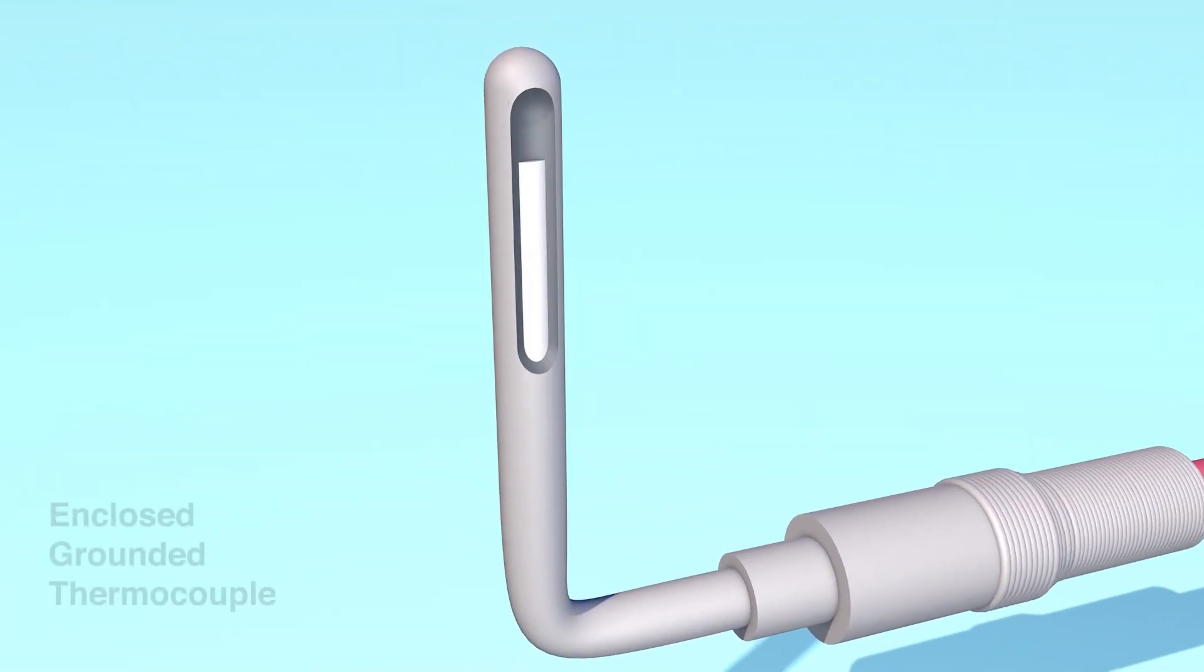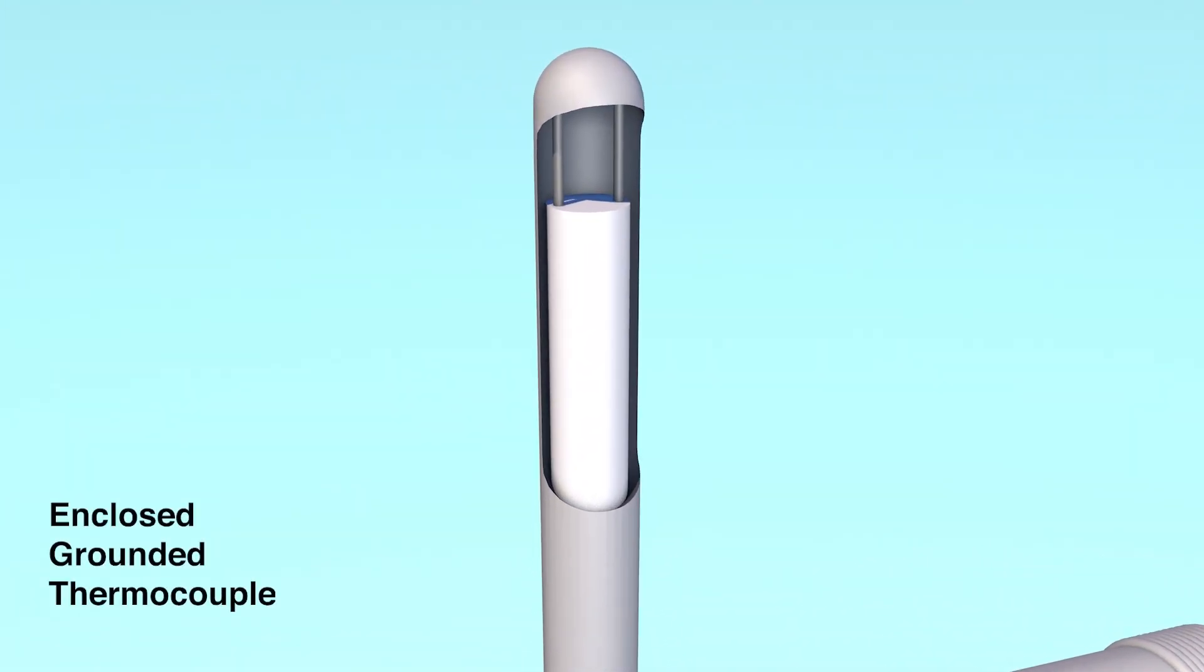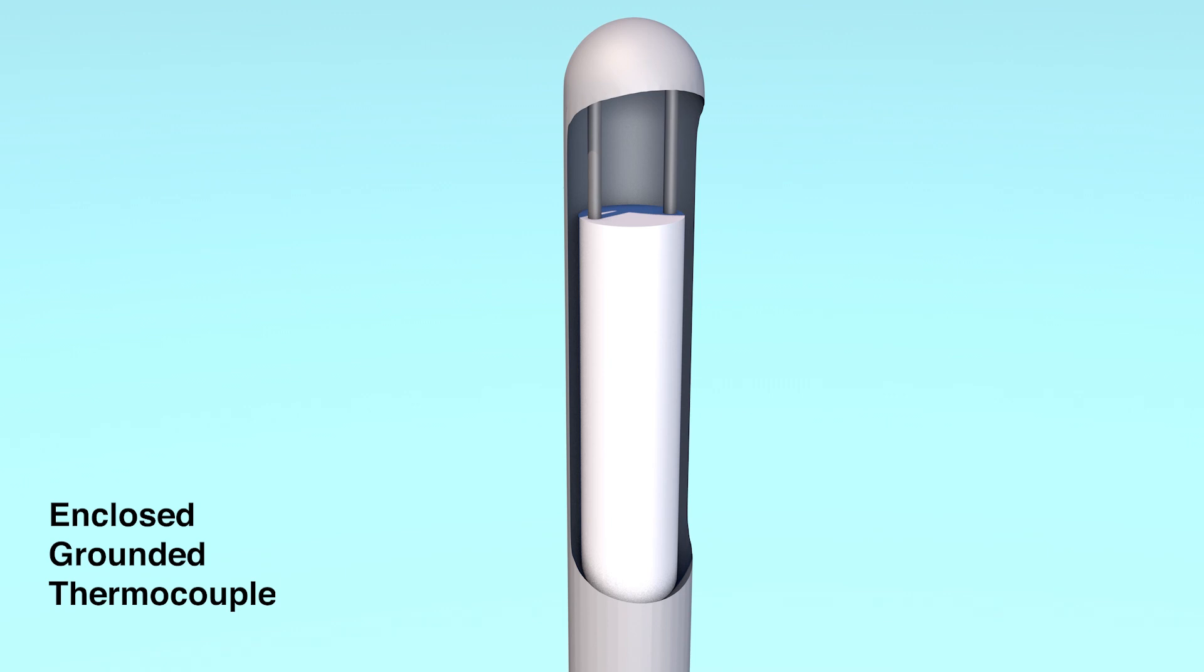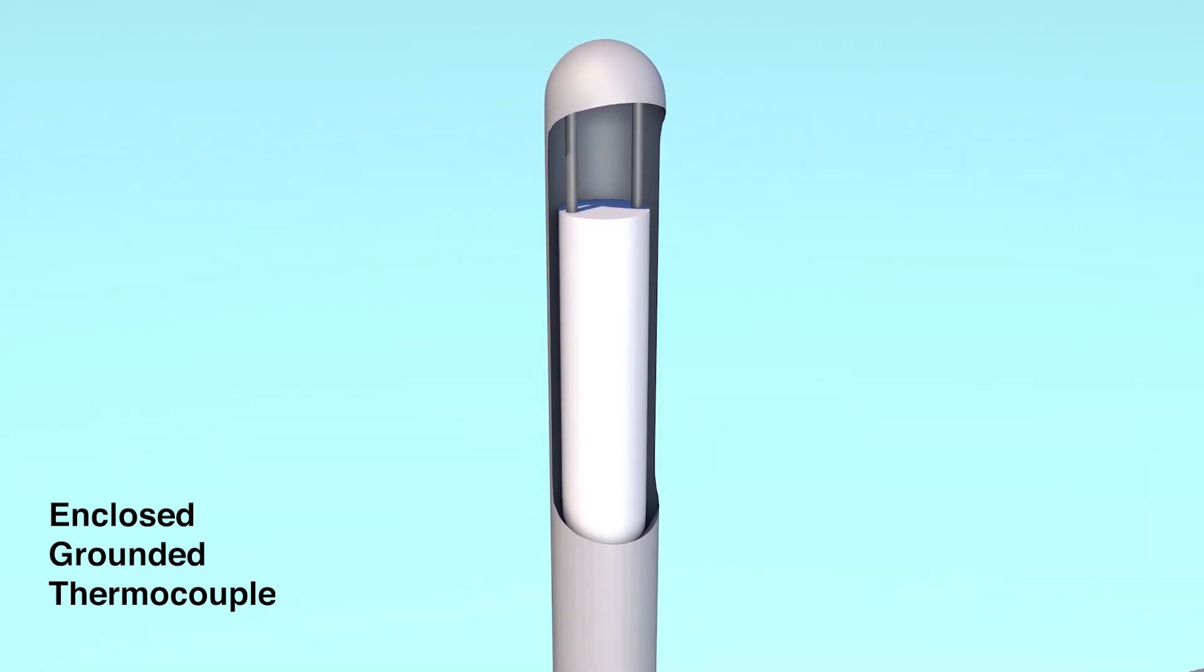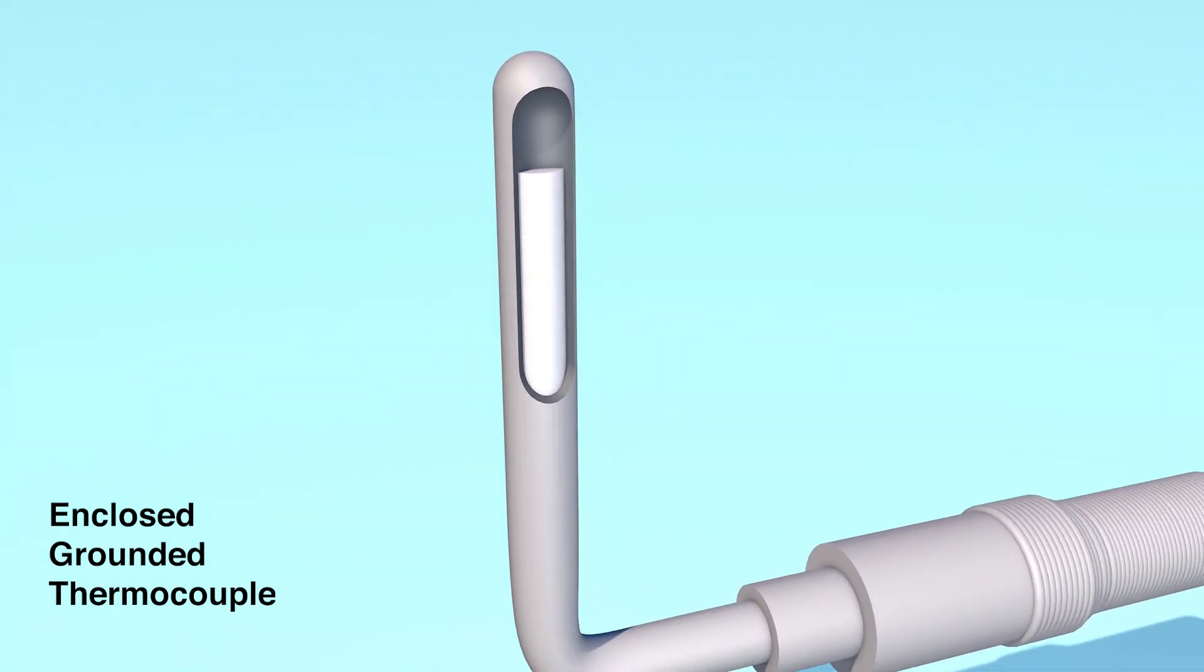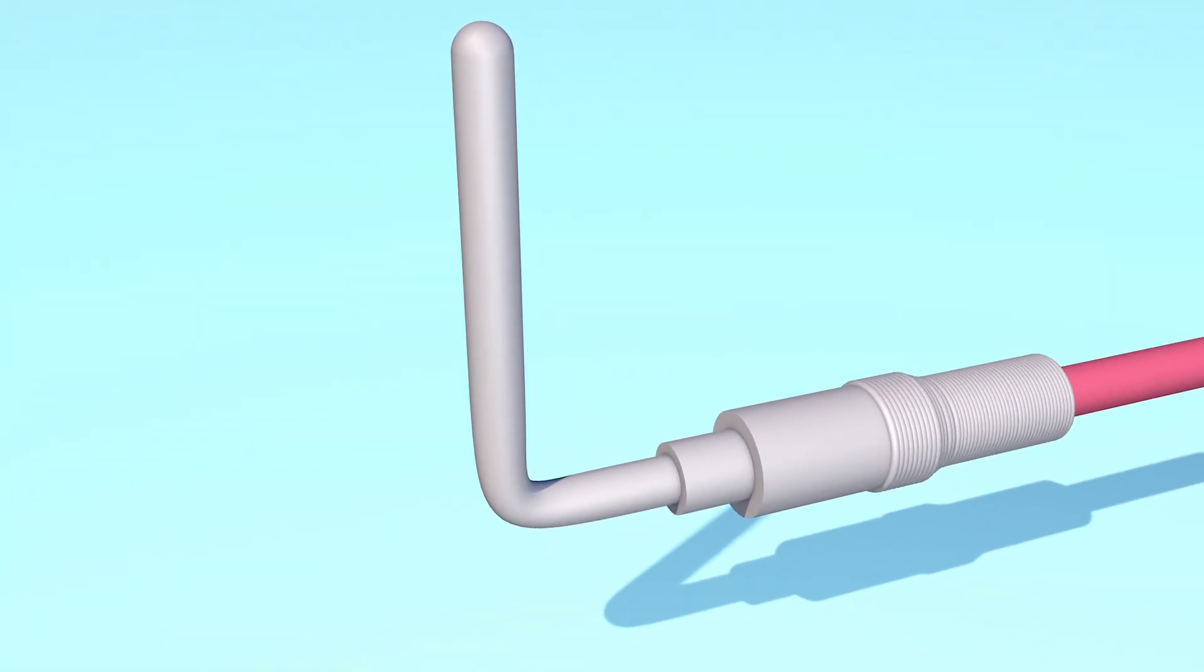The junction of an enclosed grounded thermocouple is attached to the protective sheath, giving the advantage of faster response time than the ungrounded junction type. The disadvantage is that this may introduce ground loop problems from the unintended connection of the circuit to the ground.